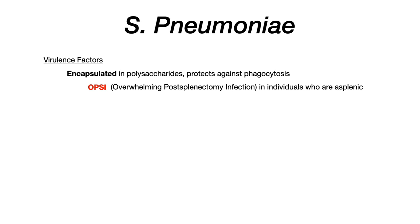So in any of these cases, anything that affects the spleen affects the body's ability to carry out opsonization, meaning complement cannot occur correctly, C3B can't be tagged on the encapsulated organism, and the organism cannot be phagocytosed by specialized macrophages. If you have a patient with anatomic or functional asplenia who develops fever, fatigue, malaise, sepsis, or dies, you want to think of encapsulated organisms. Strep pneumoniae's capsule is highly virulent and causes infections in patients with splenic problems.